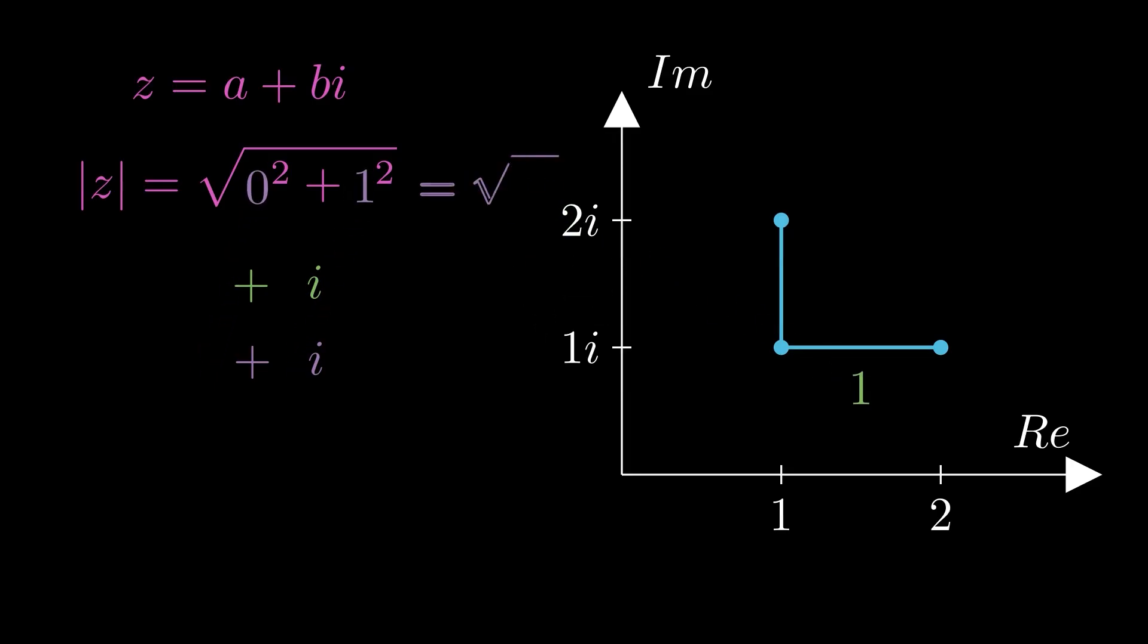For the second vector, we also get the square root of 1 squared equaling 1. And we now can see that both lengths are just 1, which therefore makes x equal the square root of 2.